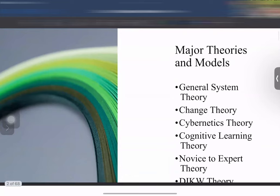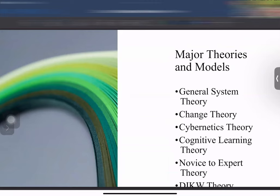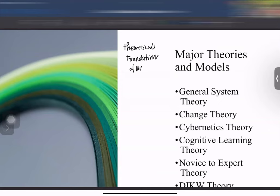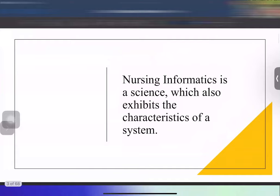We will be talking about these theories: general systems theory, change theory, cybernetics theory, cognitive learning theory, novice-to-expert theory, and the DIKW model or theory. In your level one you've learned about theoretical foundations of nursing, and this topic is actually a connection to your TFN. Most of the theories we will talk about may have been touched already in your TFN — it's just more of application in technology.